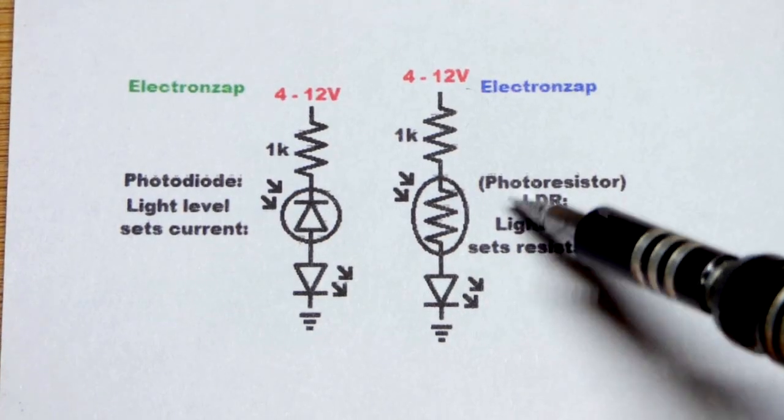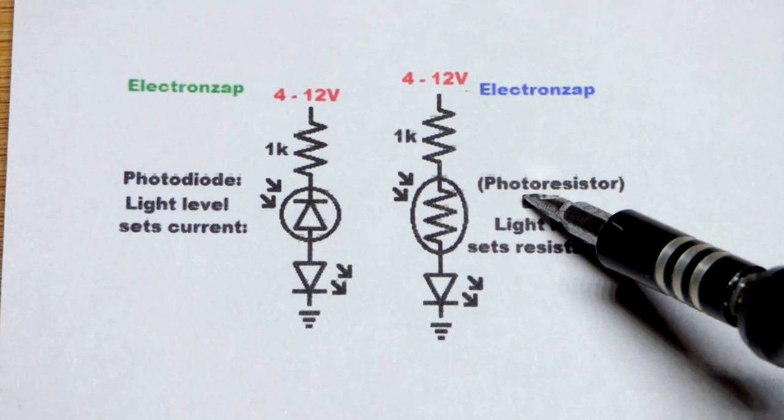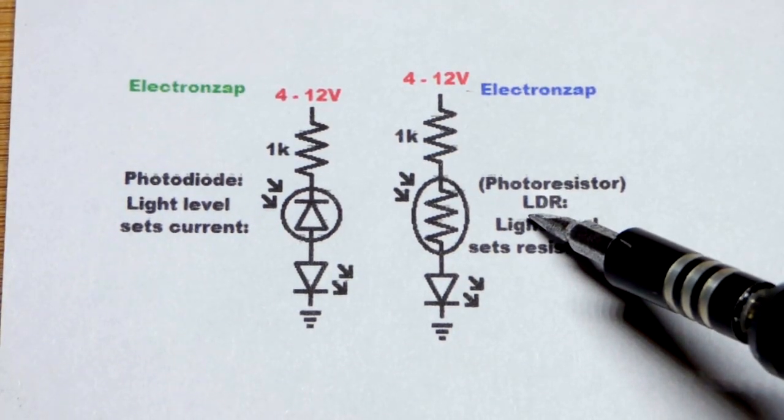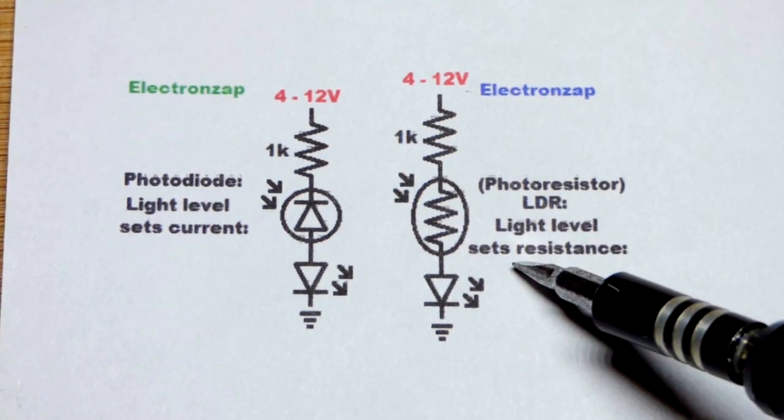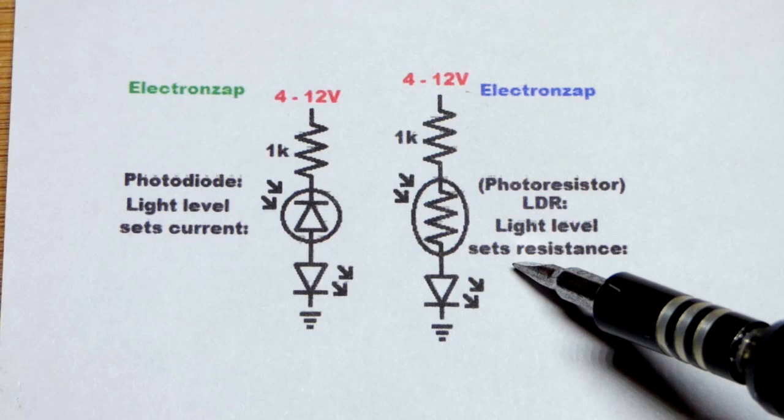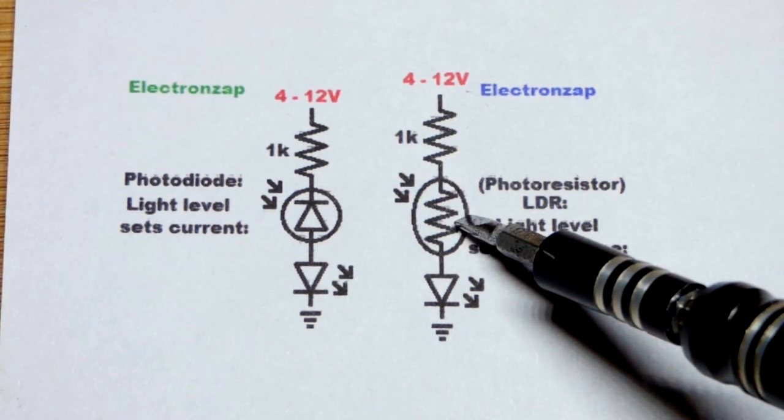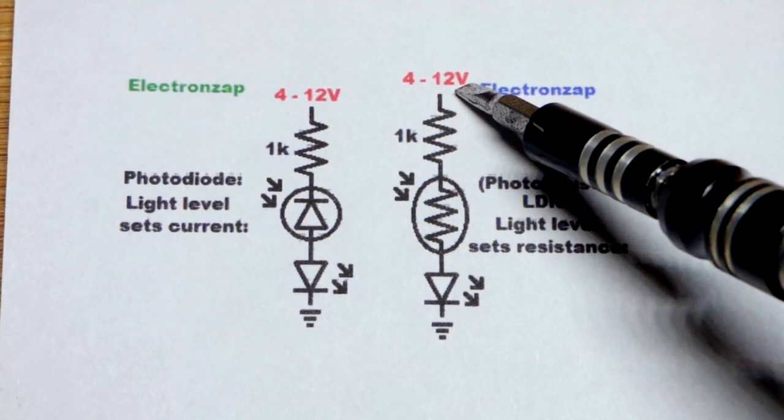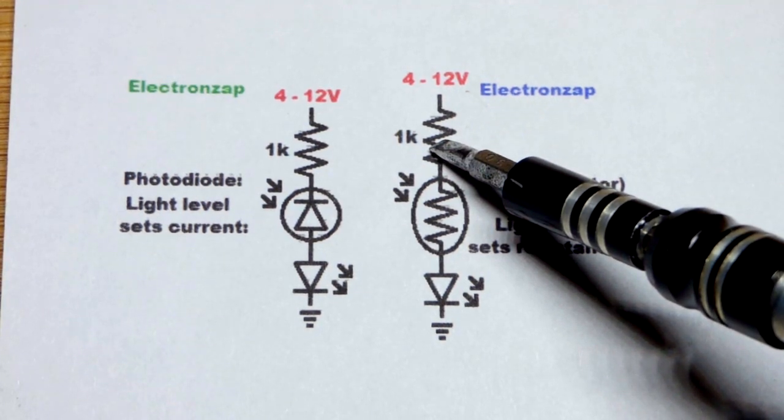Now in this video we're going to compare the more common photoresistor, which is also commonly called a light dependent resistor. Its resistance is determined by how much light is falling on it. If it gets bright enough it may get close to zero ohms of resistance, which is really low. Since we're going to go up to at least 12 volts in this video, we're going to put it in series with a 1 kiloohm resistor.